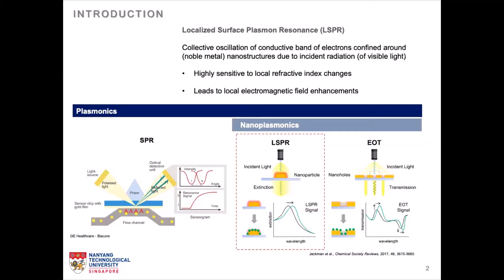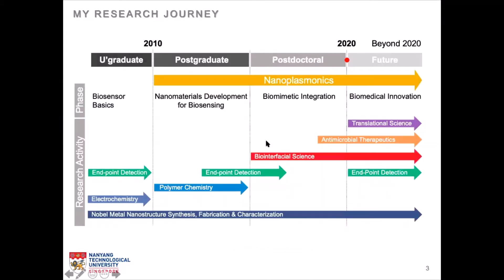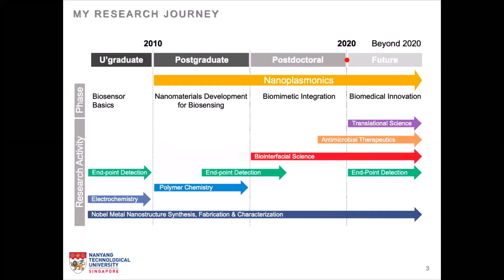So how did I start working on nanoplasmonics? Here's a brief overview of my research journey. I started getting involved in biosensor research since 2007 or 2008 when I was an undergraduate fulfilling my internship requirement at one of the A*STAR research institutes. A*STAR, by the way, is the Agency for Science, Technology and Research in Singapore. Back then I was mainly working on electrochemical biosensors detecting nucleic acids and glucose by means of growing silver nanoparticles across interdigitated electrodes.